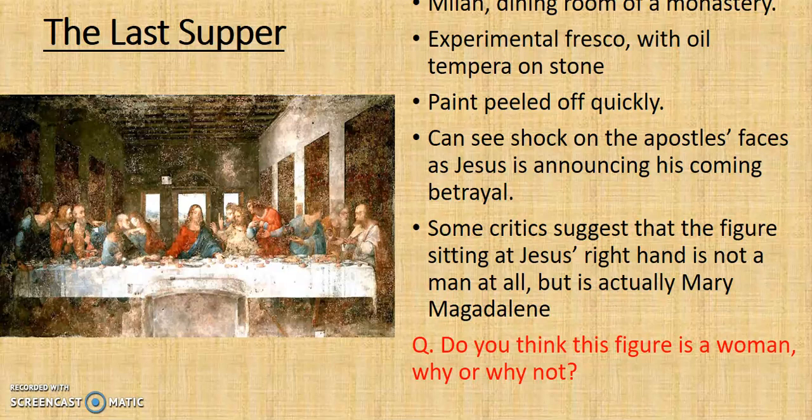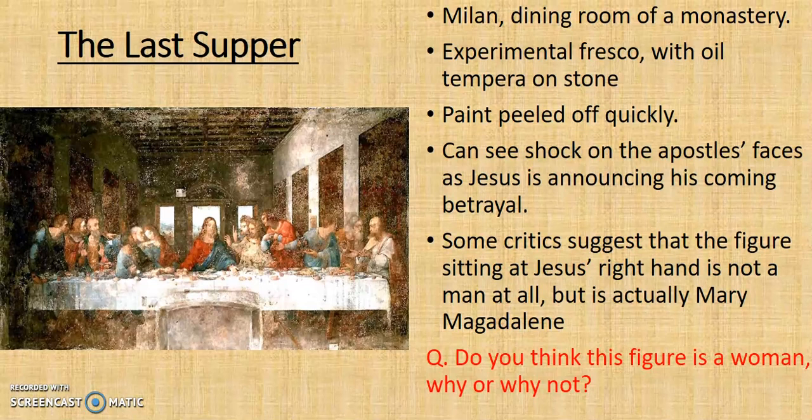Arguably da Vinci's most famous painting is the Last Supper — you can see perspective in this painting. The Last Supper is seen to be based on the dining room of a monastery in Milan. It's an experimental fresco with oil, tempera, and stone, and the paint peeled off quickly. You can see the shock on the apostles' faces as Jesus announces his coming betrayal. Some critics suggest that the figure sitting at Jesus' right hand is not a man at all but is actually Mary Magdalene — even today we're unsure whether it's a man or a woman. The detail of all the apostles is individualized, showing the shock and awe of the moment.